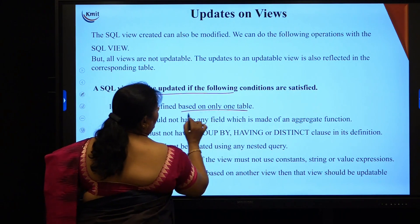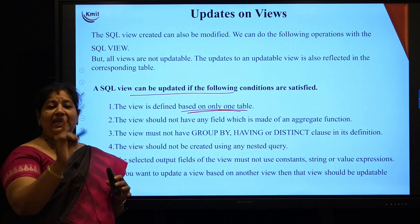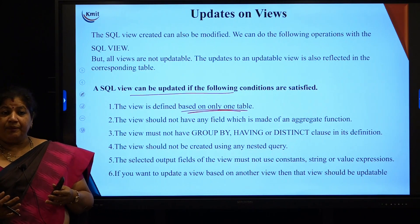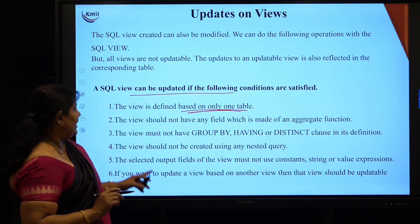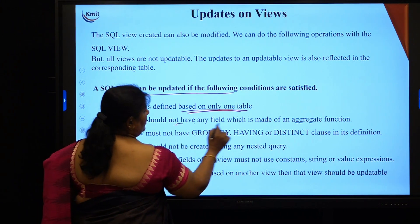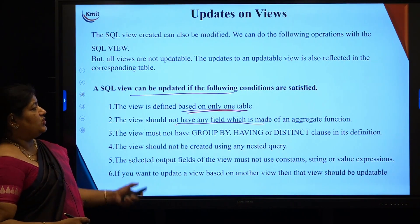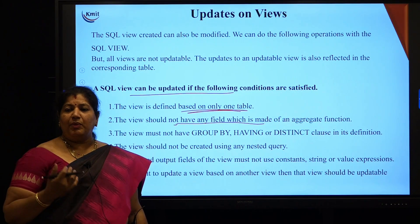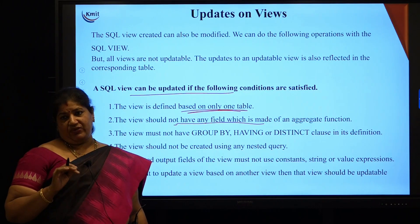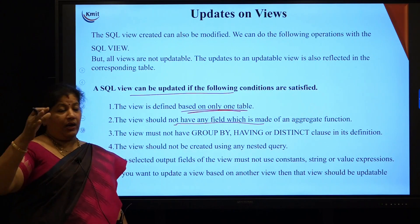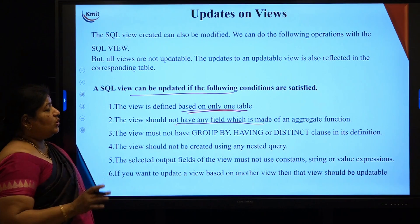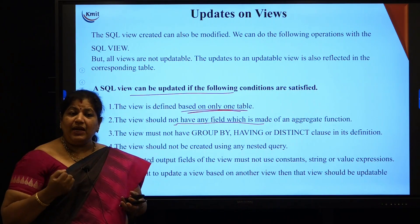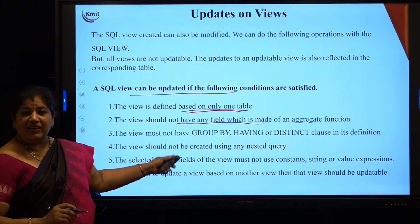What are the conditions for updatable views? Not all views are updatable. First, it should be defined based on only one table — when a view is created using only one table, it can be updated. Second, the view's fields should not make use of any aggregate functions. Functions like SUM, MAX, or MIN applied to a group of data should not be used in creating the view's columns. We must also not have used GROUP BY or HAVING, since those operate on sets of data.